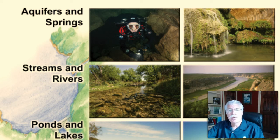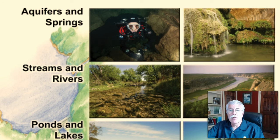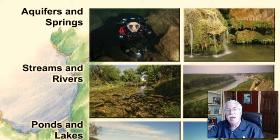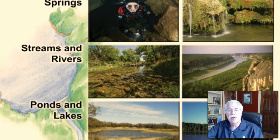Springs are the points where, because of underground geology, groundwater travels to the surface and emerges from the ground. Springs can be a slow seep where spring water bubbles up in ponds and pools, and sometimes in very forceful streams of water. Springs sometimes form the headwaters of streams and rivers. Texas is home to over 3,000 springs, including some of the largest in the United States.